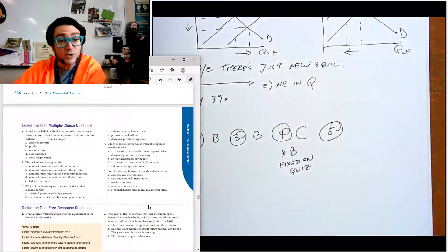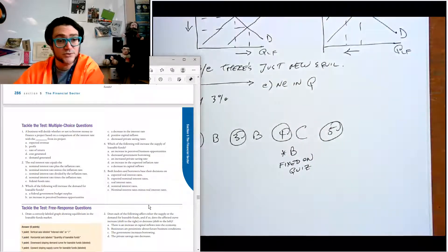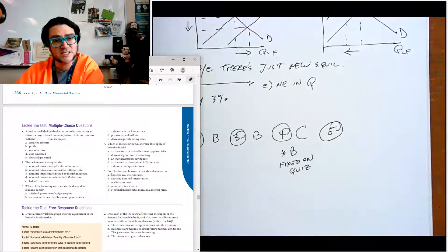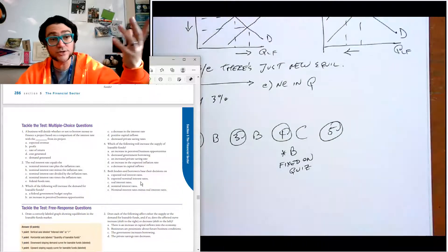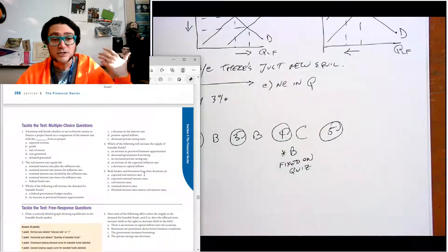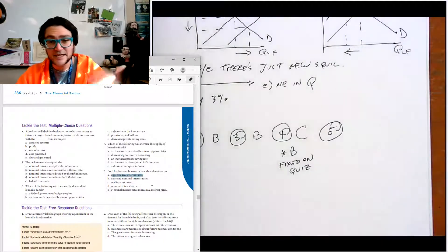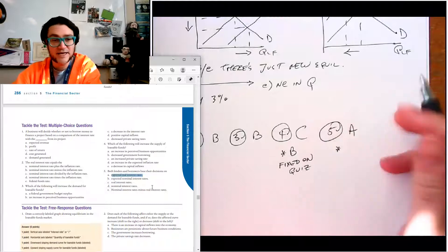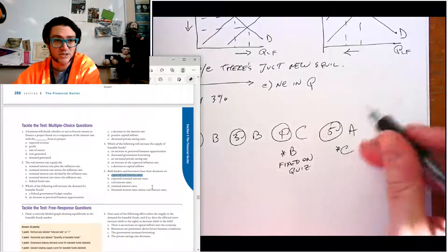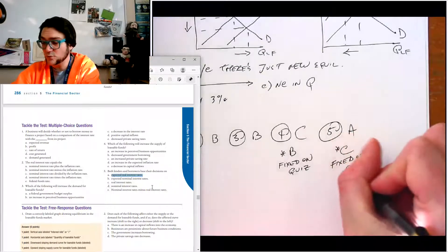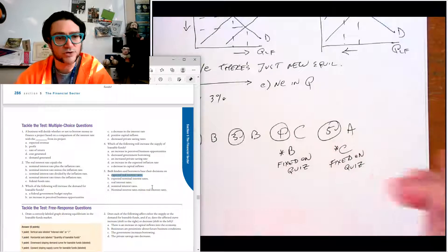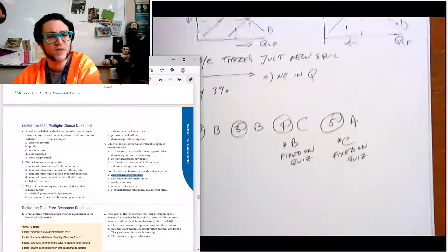Number five, both lenders and borrowers base their decisions on the real interest rate. That's kind of what we can say here. The expected real interest rate, that's probably what they want you to say for this problem, just because you don't know what your actual real interest rate is going to be until afterwards. So technically I bet they want you to say A here. But I'm going to tweak that and just change it because C is essentially a similar concept. I'm going to say fixed on the quiz, so that you won't see two of them saying real interest rate because that's a problem there.